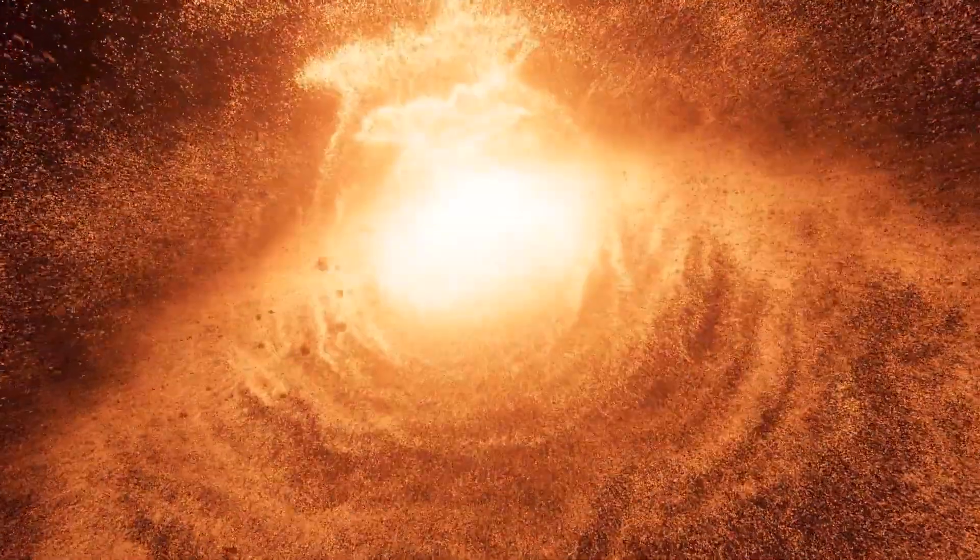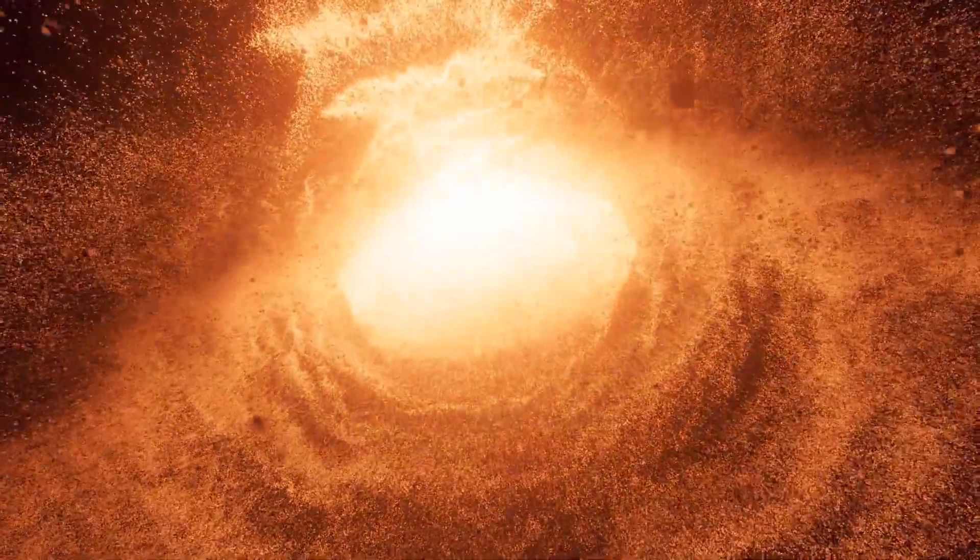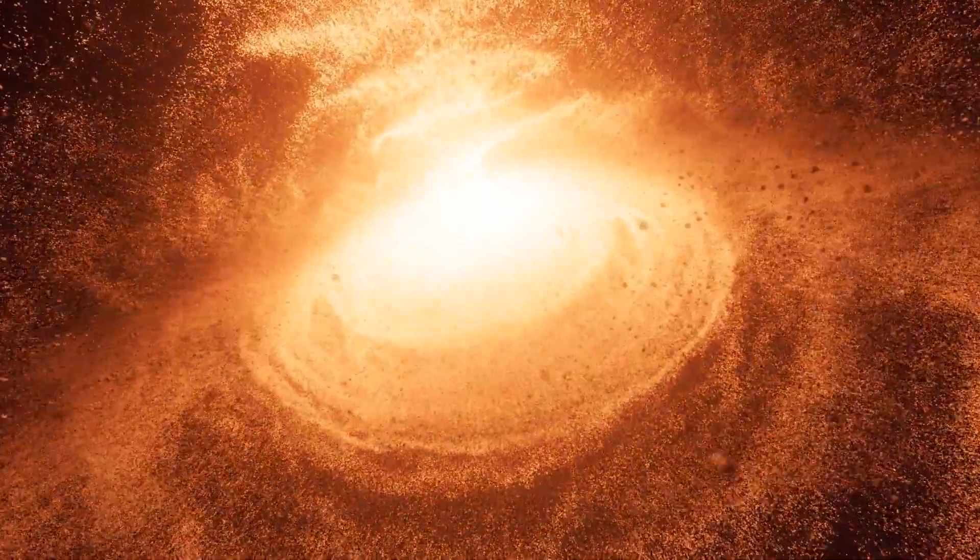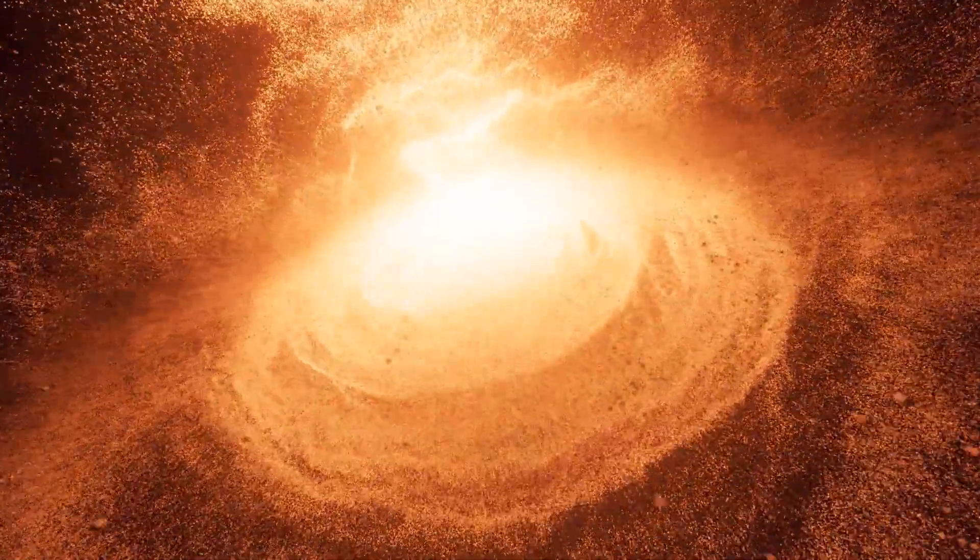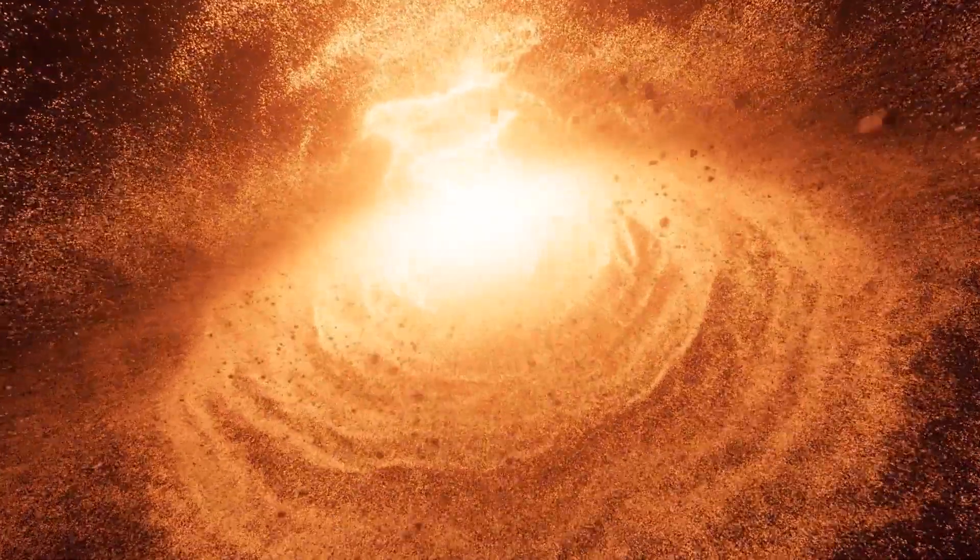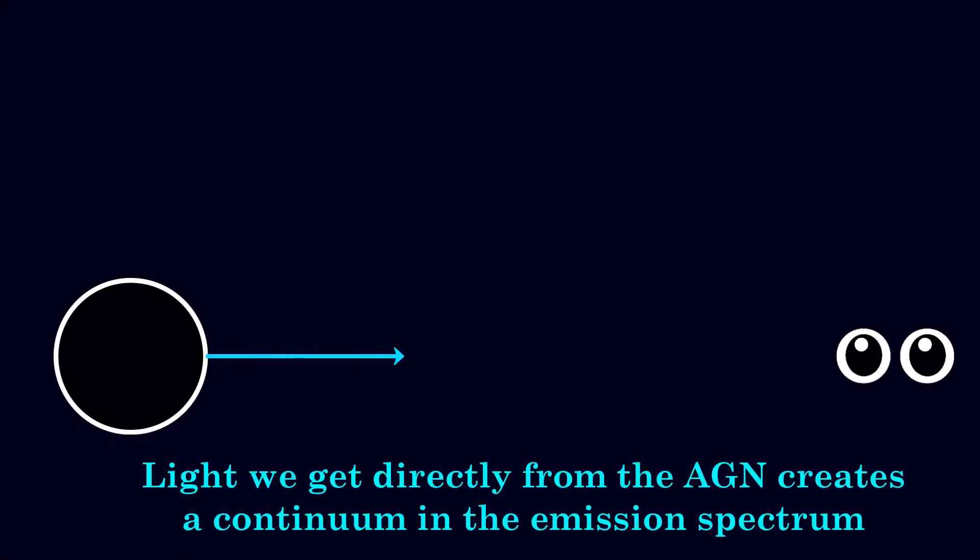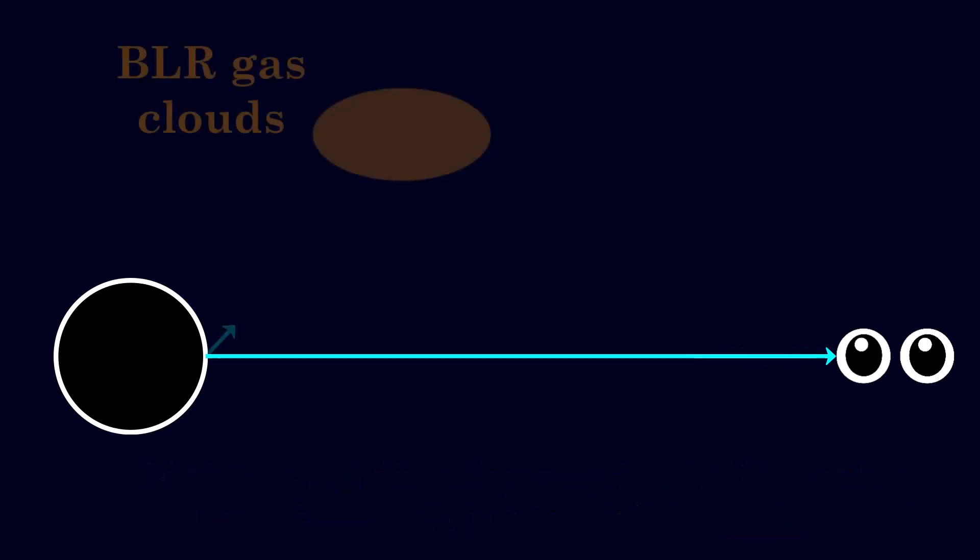Now we can't usually see the black hole directly, as discussed earlier, but we can see the light from the broad line region surrounding it. However, the continuum emission from the AGN naturally varies over time due to what it's accreting in its accretion disk and other factors. Some of this continuum emission is able to escape through the dusty torus and broad line region of the AGN where we can detect it directly, and some of it gets absorbed and re-emitted by gas in the broad line region.